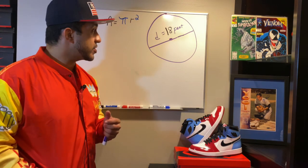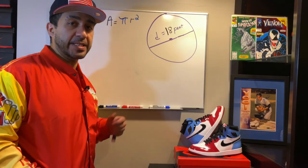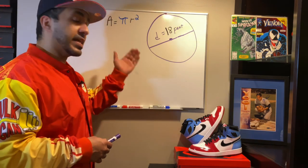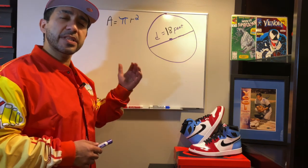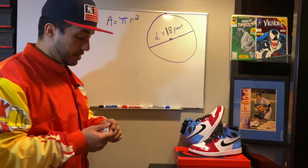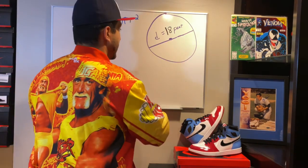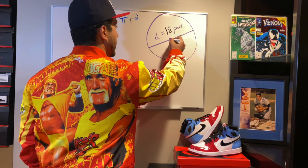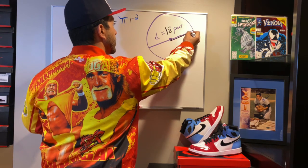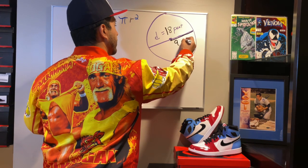So here we have a circle with a given diameter of 18 feet. First piece of advice: they give you the diameter, take a moment to label the radius. The radius is half of the diameter, so the diameter is 18 feet, the radius will be 9 feet.